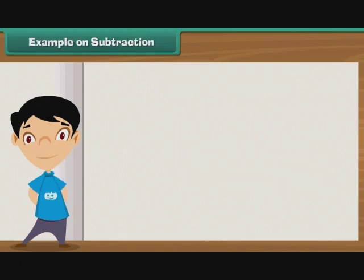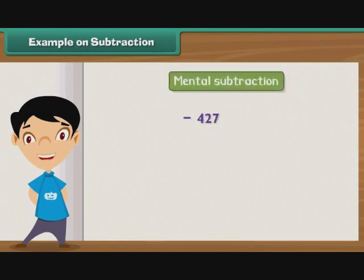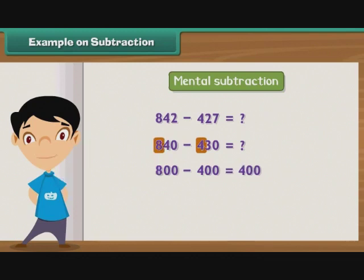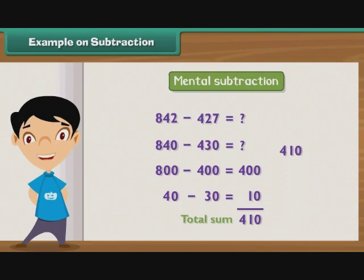Let us practice mental subtraction. Subtract 427 from 842. To simplify subtraction, let us convert 427 to 430 and 842 to 840. To subtract 430 from 840, first subtract 400 from 800 to get 400. Then subtract 30 from 40 to get 10. Therefore, the difference between 840 and 430 is 410.